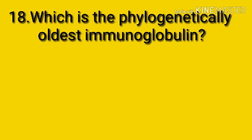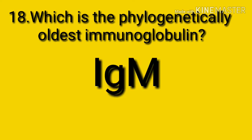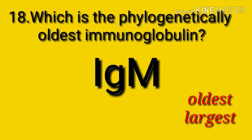Question number eighteen: which of the following is the phylogenetically oldest immunoglobulin? The answer is immunoglobulin M. IgM is the phylogenetically oldest immunoglobulin. Also remember that IgM is both the oldest and the largest immunoglobulin.